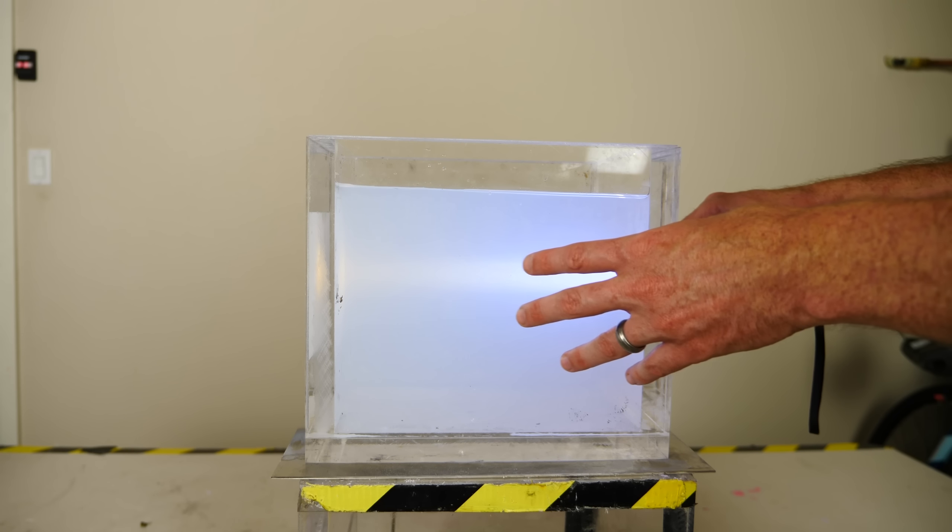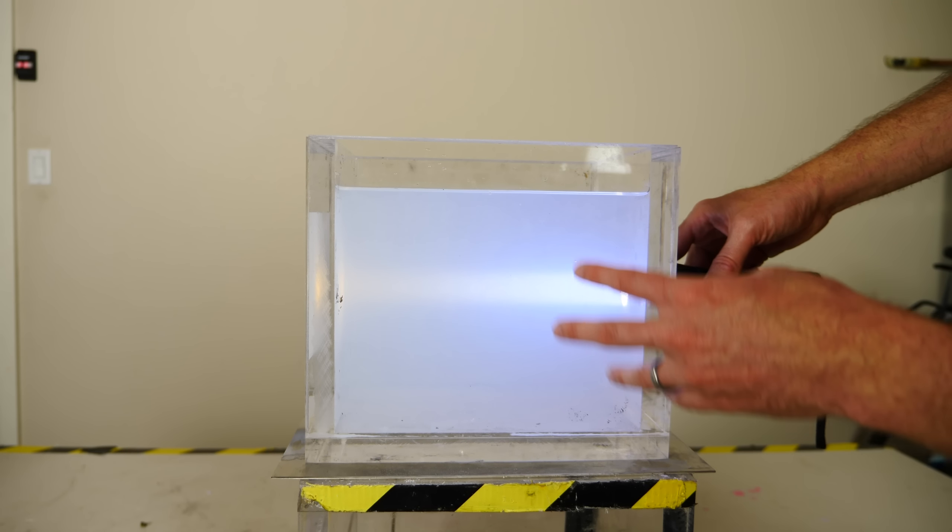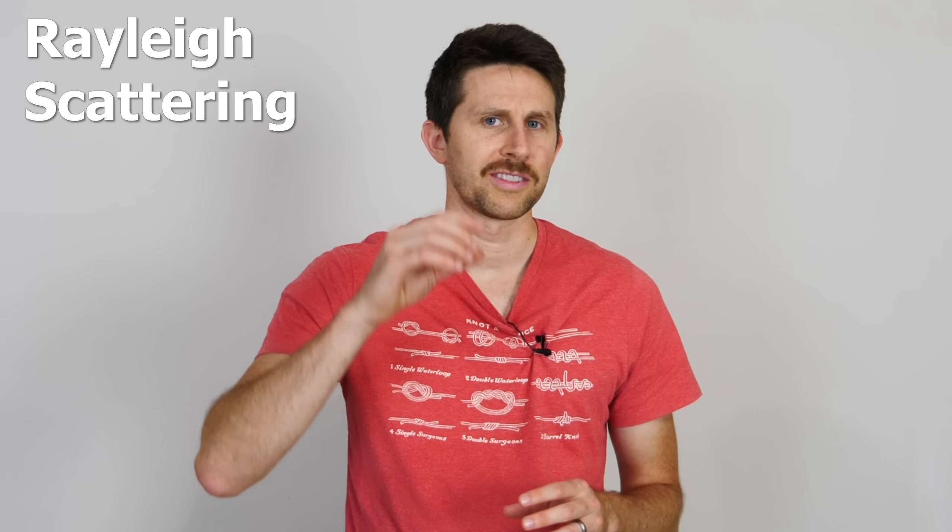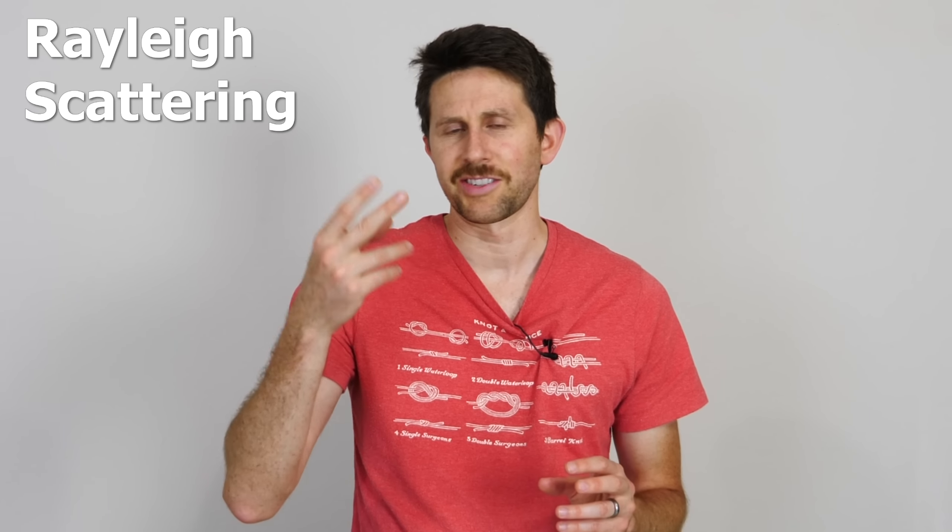These milk particles are scattering blue light just like the air in our atmosphere scatters blue light. So this type of scattering is called Rayleigh scattering, and it's applicable for molecules the size of air molecules like nitrogen and oxygen, all the way up to particles about a tenth the wavelength of light. So that means it's applicable to milk proteins dissolved in water. That's why it worked in our milk-water experiment as well.